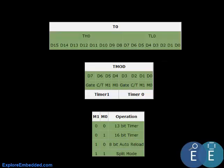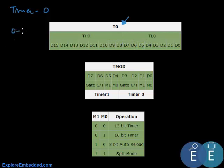Now let's look at the registers associated with the timers. We will deal with Timer 0; Timer 1 is identical. The register that holds the actual count is the timer register. Since it is 16-bit, for Timer 0 it is called T0 and is divided into two 8-bit halves: TL0 (low byte) and TH0 (high byte), which can be accessed separately. The count runs from 0 to 65535.